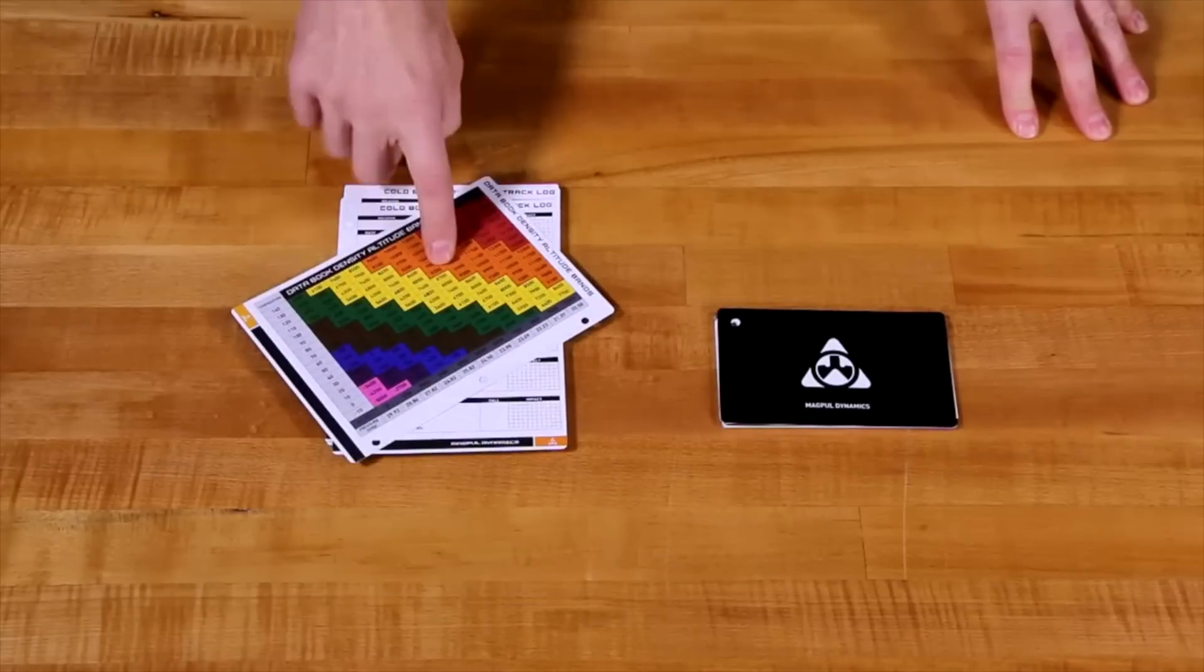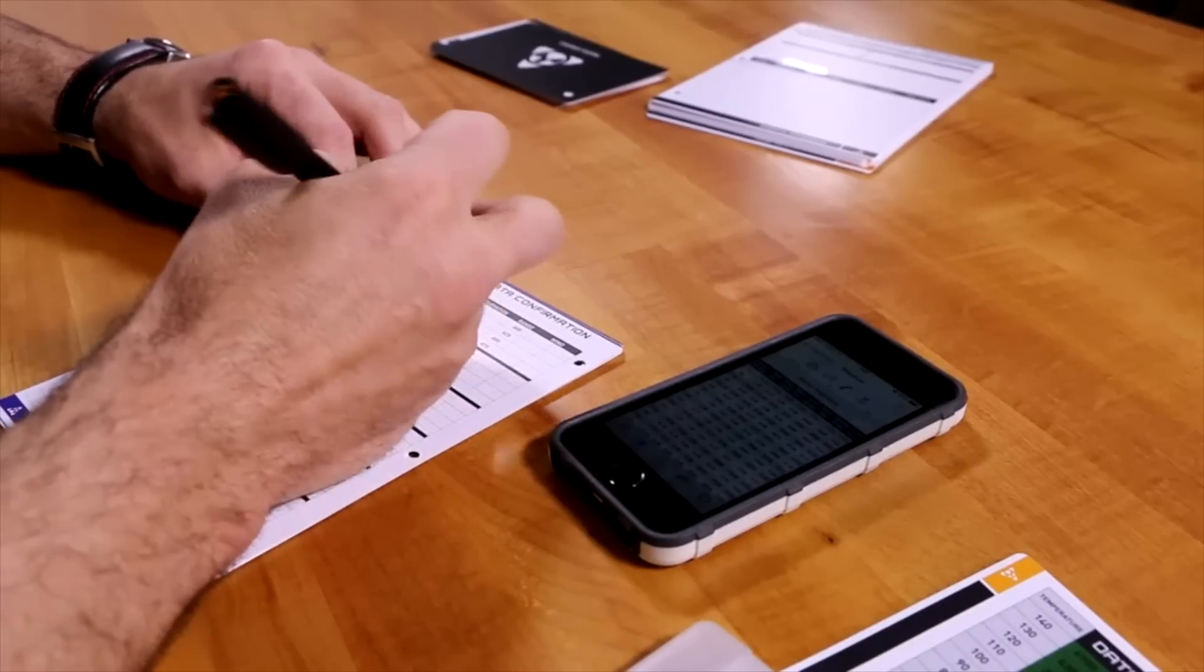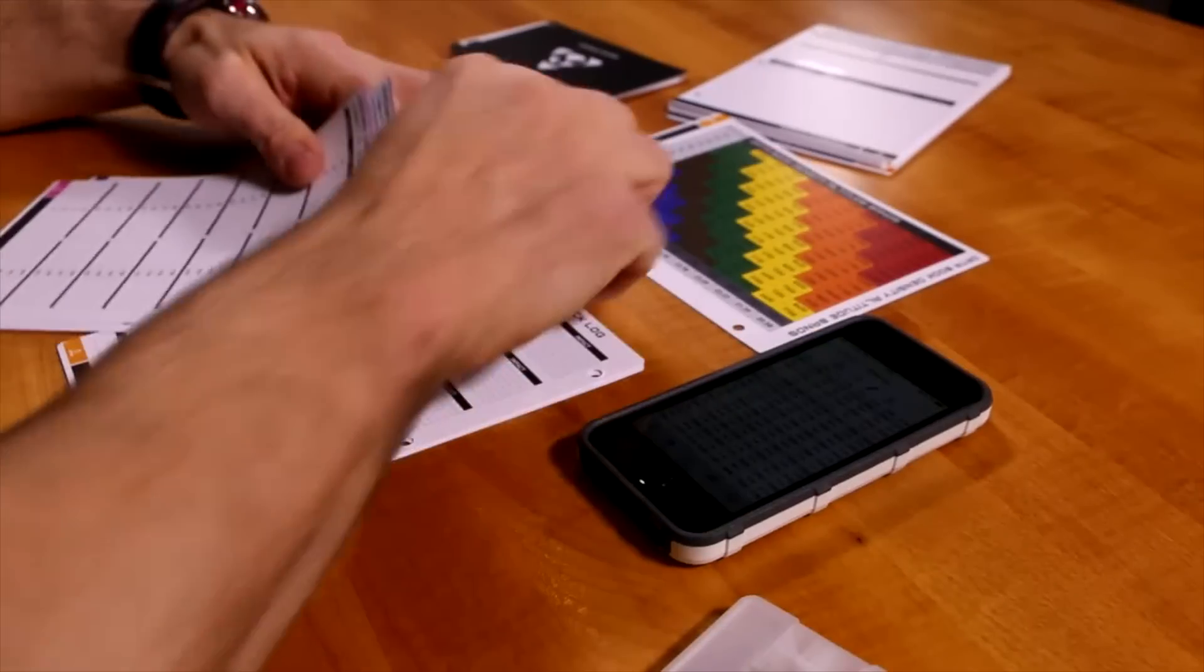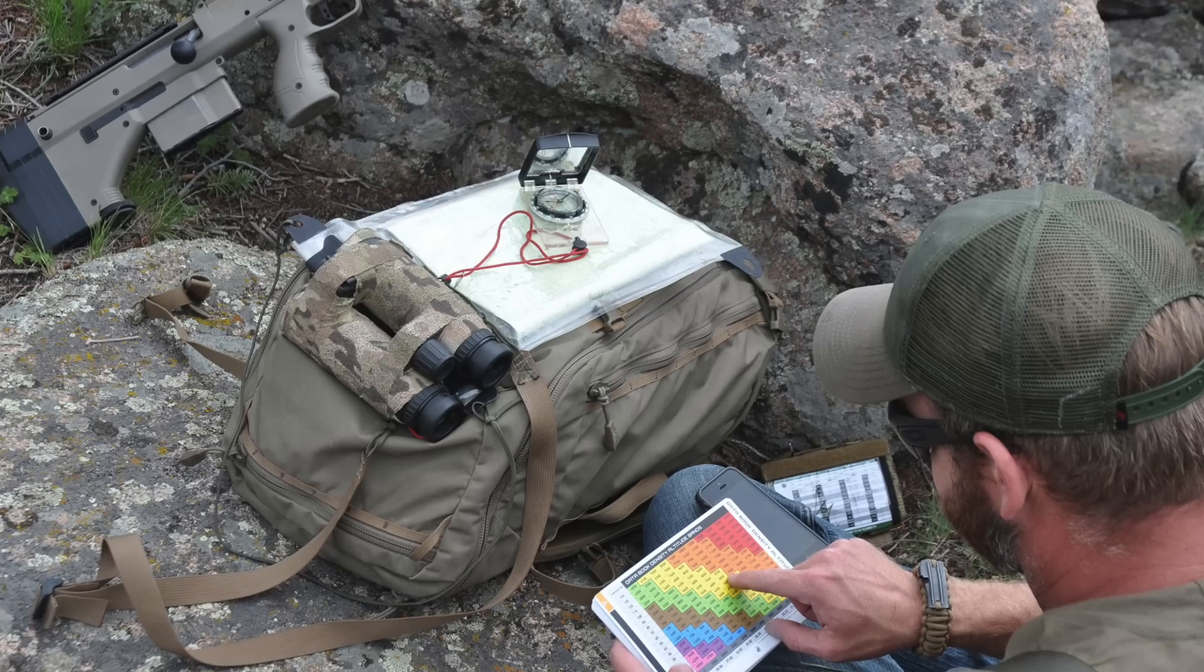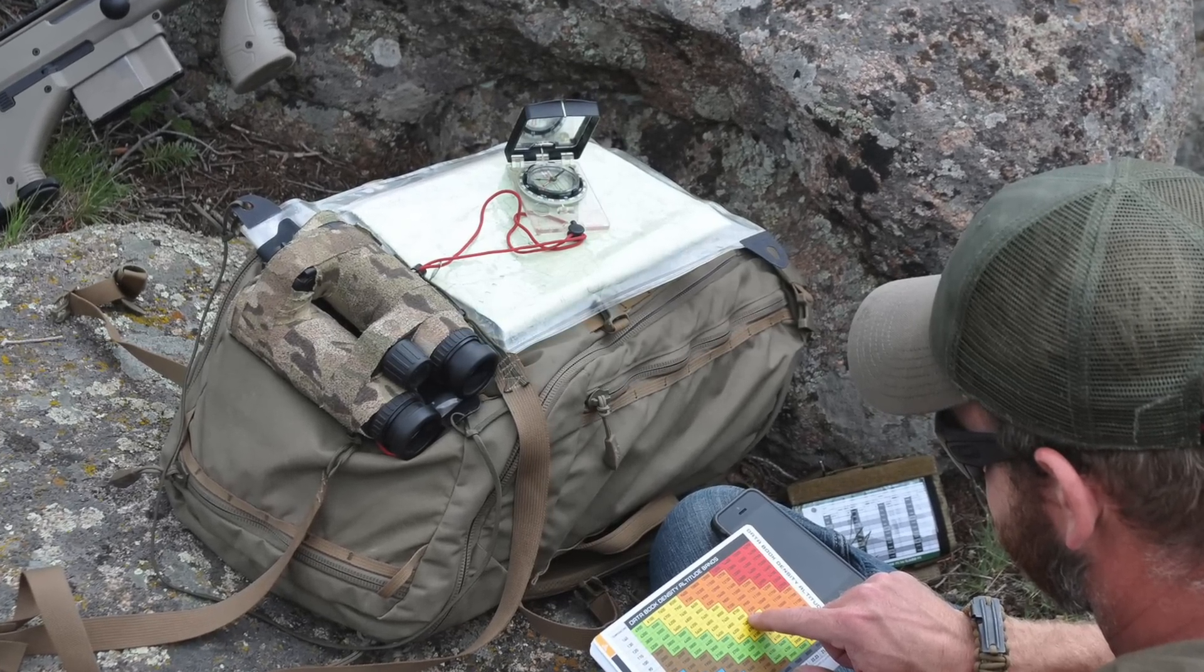The data book is based on dividing firing data into bands of density altitude. The cards are filled out by the user based on your preferred ballistic solver calculations for a centroid altitude for each band. The data is verified on the range, and then in use you can simply refer to the color coded density altitude chart to see which color card and data that you need to use.